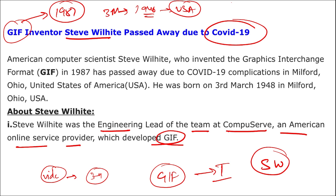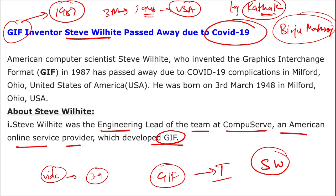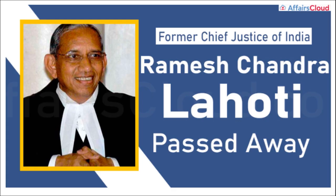A legendary Kathak dancer recently passed away — he is Birju Maharaj. He belongs from Uttar Pradesh.